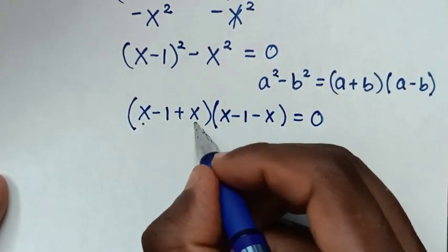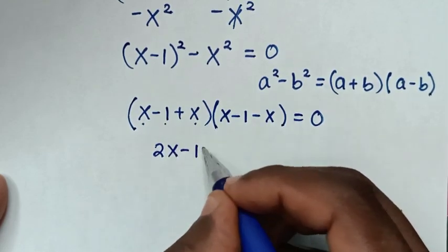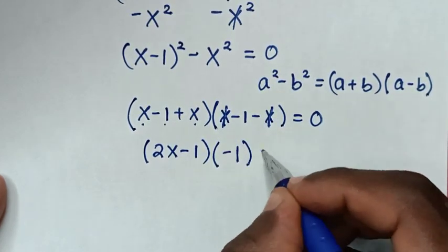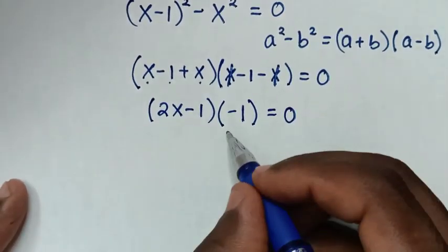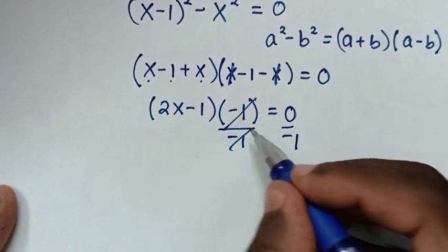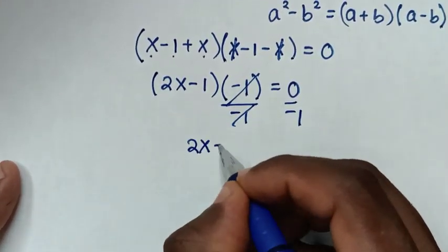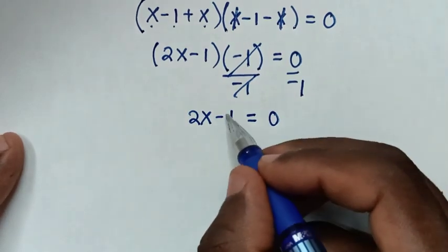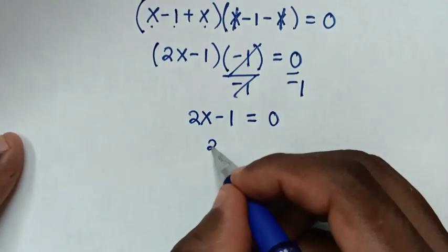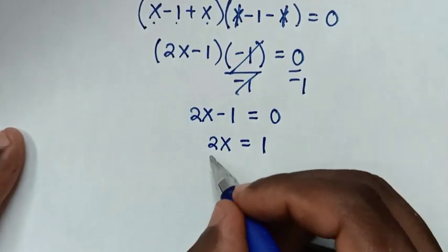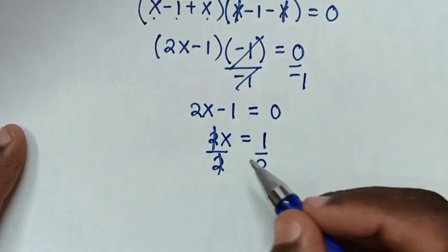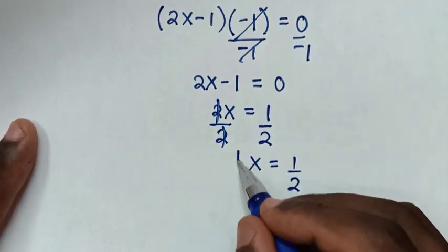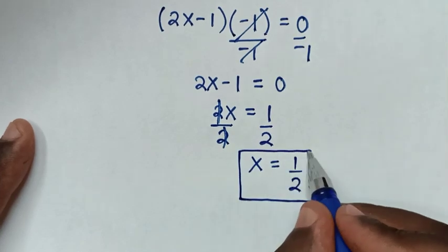Simplifying: x plus x is 2x, so the first bracket becomes (2x minus 1). In the second bracket, x minus x is 0, so we are left with negative 1. Dividing both sides by negative 1, we get 2x minus 1 equals 0. Taking negative 1 to the right side gives 2x equals 1. Dividing by 2 on both sides, x equals one half. This is the same answer from the second solution.